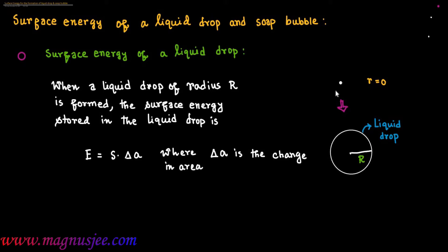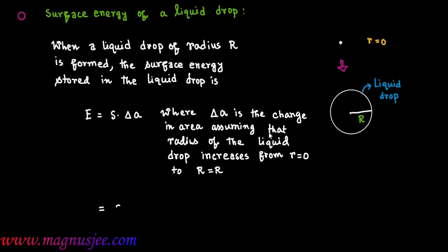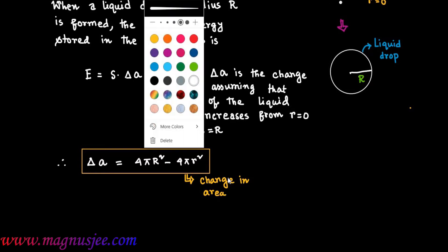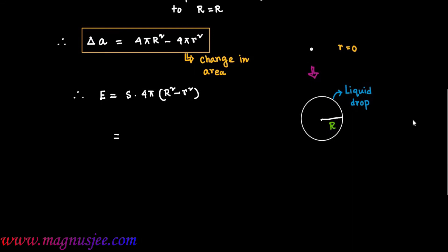The radius of the liquid drop increases from initial radius r equals 0 to capital R. Therefore, delta A, the change in area, is equal to 4πR² minus 4πr². That is the change in area when a point liquid drop is blown into a liquid drop of radius capital R. Therefore, E equals S dot (4πR² minus r²).